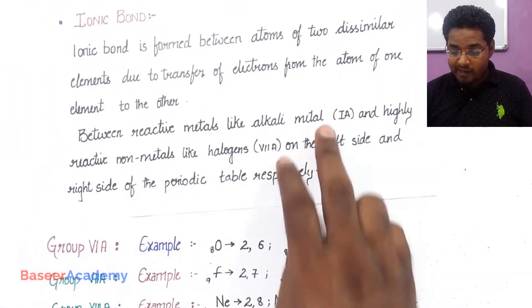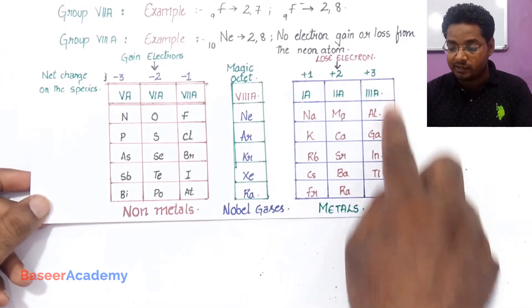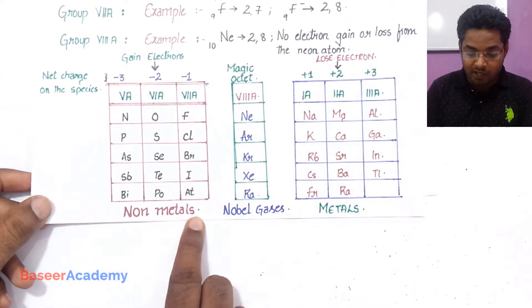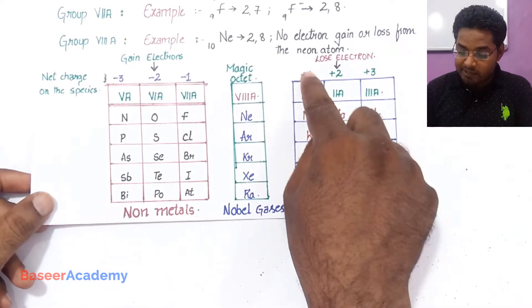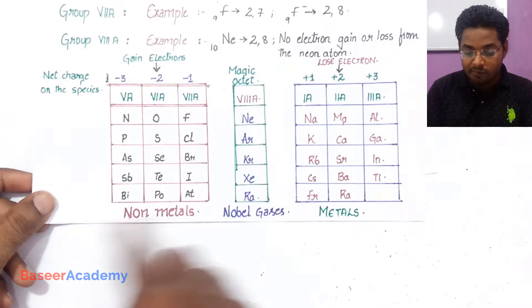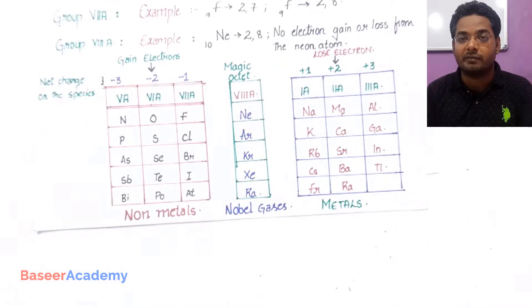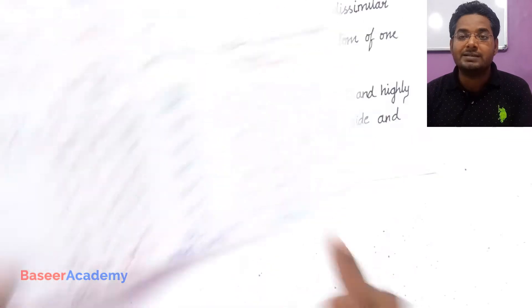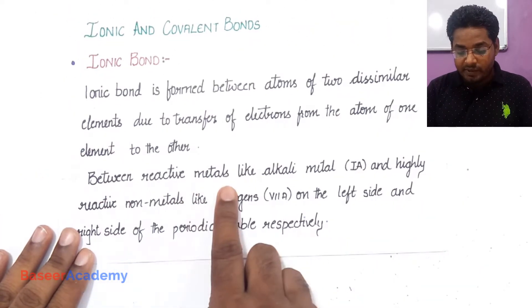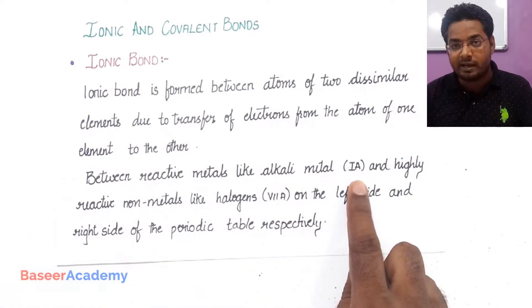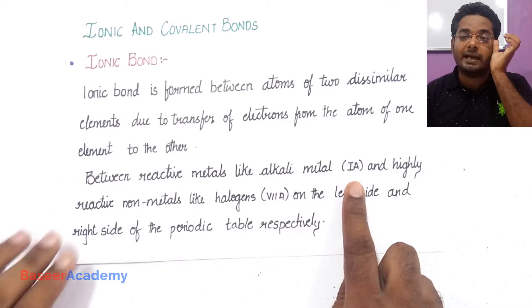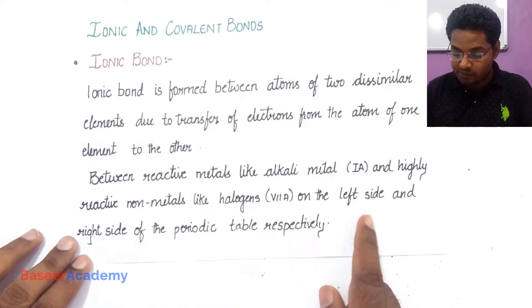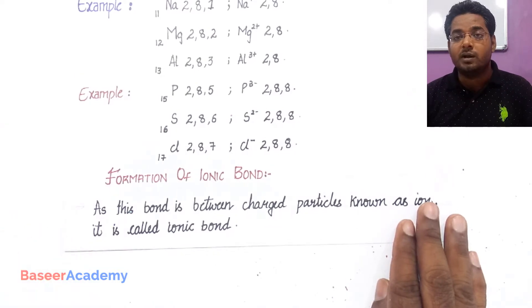Ionic bond mostly happens between highly reactive metals. Elements on the left-hand side of the periodic table belonging to groups 1A, 2A, and 3A are metals, and elements on the right-hand side are mostly non-metals. Group 1A elements are highly reactive metals and group 7A elements are highly reactive non-metals. Ionic bond mostly takes place between group 1A elements, known as alkali metals, and group 7A elements, known as halogens.